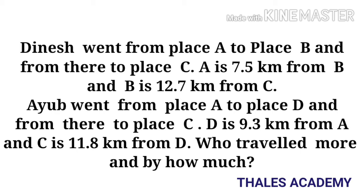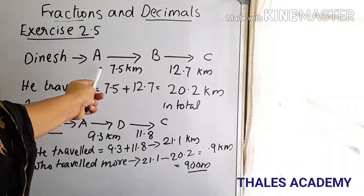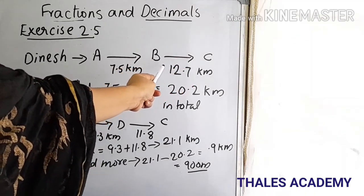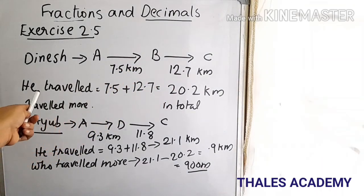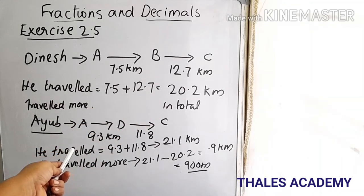The next question: Dinesh went from place A to place B and from there to place C. A is 7.5 km from B and B is 12.7 km from C. Another person went from place A to place D and from there to place C. D is 9.3 km from A and C is 11.8 km from D. Who travelled more? Dinesh travelled 7.5 plus 12.7, which equals 20.2 km in total.